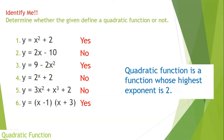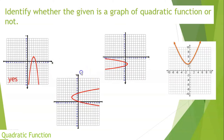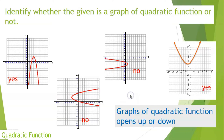What about if the given is a graph? How are you going to identify whether it defines a function or not? I have here four different graphs. Number one is a quadratic function. Number two is not a graph of a quadratic function. Number three is not. And number four is yes. When you say graph of a quadratic function, it opens up or down. That's why number one and number four are graphs of quadratic functions, while number two and number three are just graphs of quadratic equations but not a function.